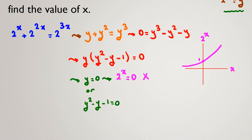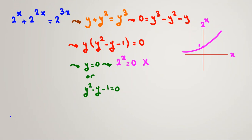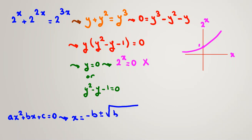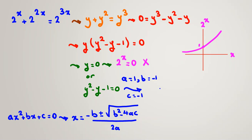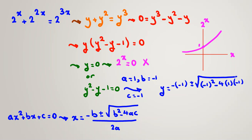Now let's focus on the second term using the quadratic formula. If ax squared plus bx plus c equals 0, then x equals negative b plus or minus the square root of b squared minus 4ac, all over 2a. Here a equals 1, b equals negative 1, and c equals negative 1.